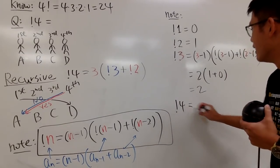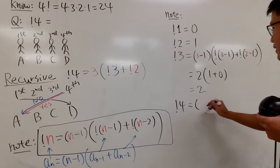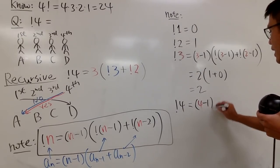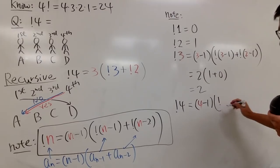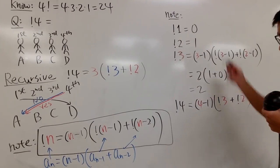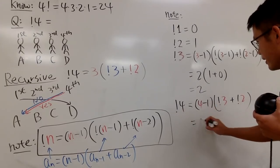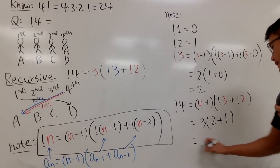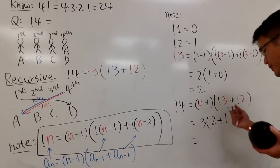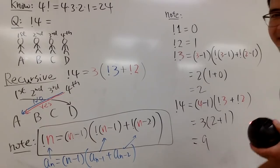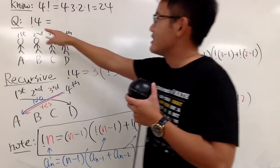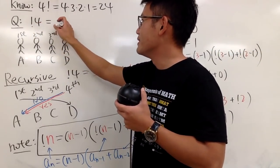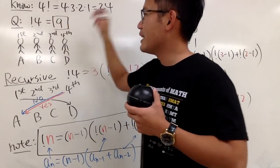And now, subfactorial 4. Well, this is going to be 4 minus 1 times... Pretty much, subfactorial 3 plus subfactorial 2, which we did that earlier. So this right here is 3 times... This right here is 2, plus this right here is 1. I don't need to explain. This is equal to 9. Therefore, subfactorial 4 is equal to 9. Like that.